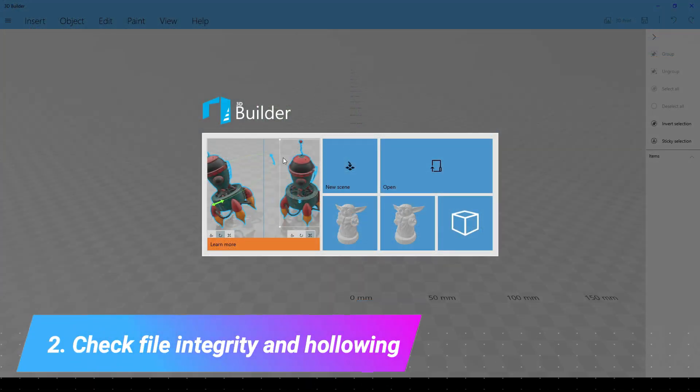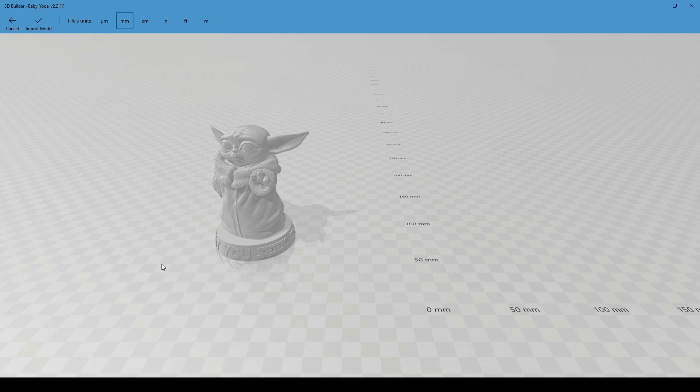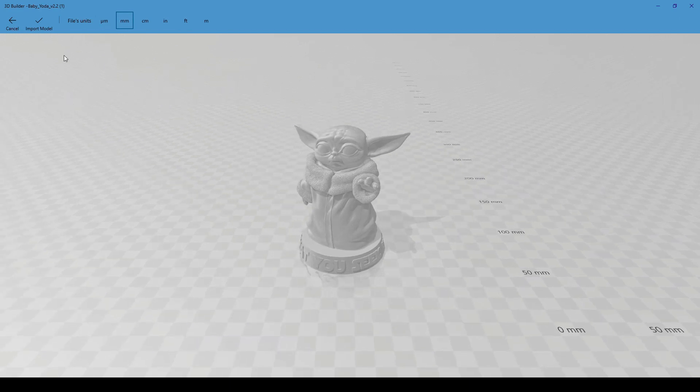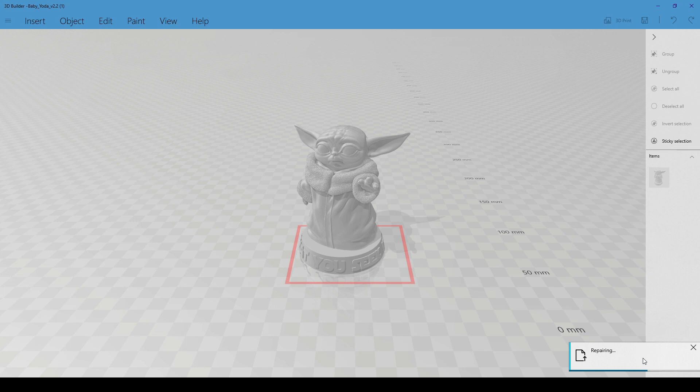The second step is to check the file integrity and hollow the file. Especially people who are starting the hobby now do not have this notion that you can hollow a model for two reasons. First one is more obvious. If a model is hollowed, it will spend less resin. The other reason is to reduce the surface of contact with the FEP and reduce the peeling force that can lead to fails.